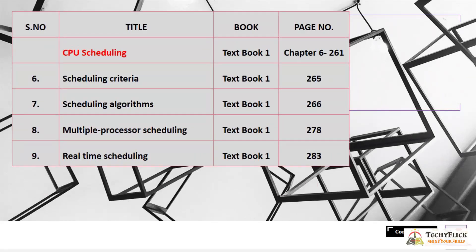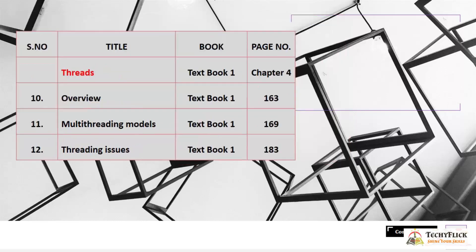The next subtopic is CPU Scheduling, which is Chapter 6 from Textbook 1, starting at page 261. This includes Scheduling Criteria and Scheduling Algorithms on pages 265 and 266, Multiprocessor Scheduling on page 278, and Real-Time Scheduling on page 283.